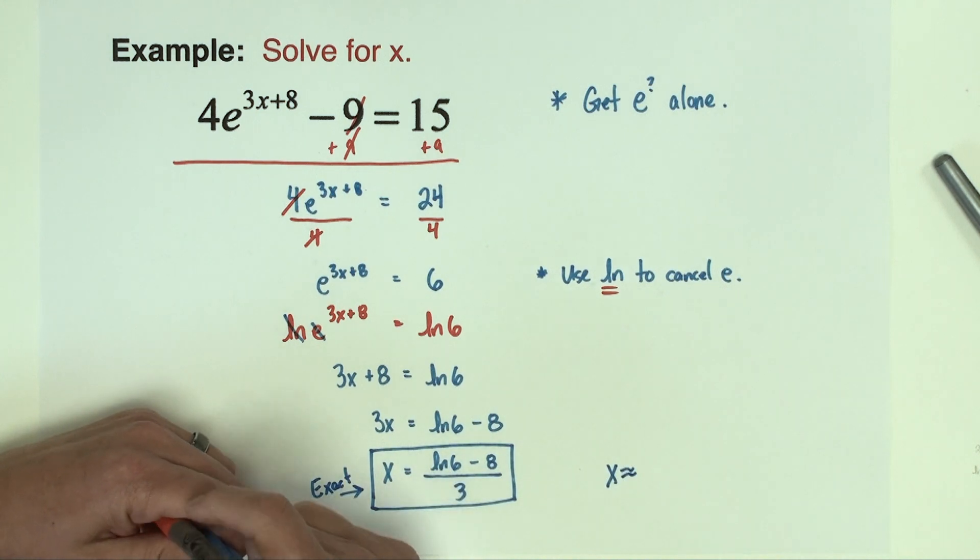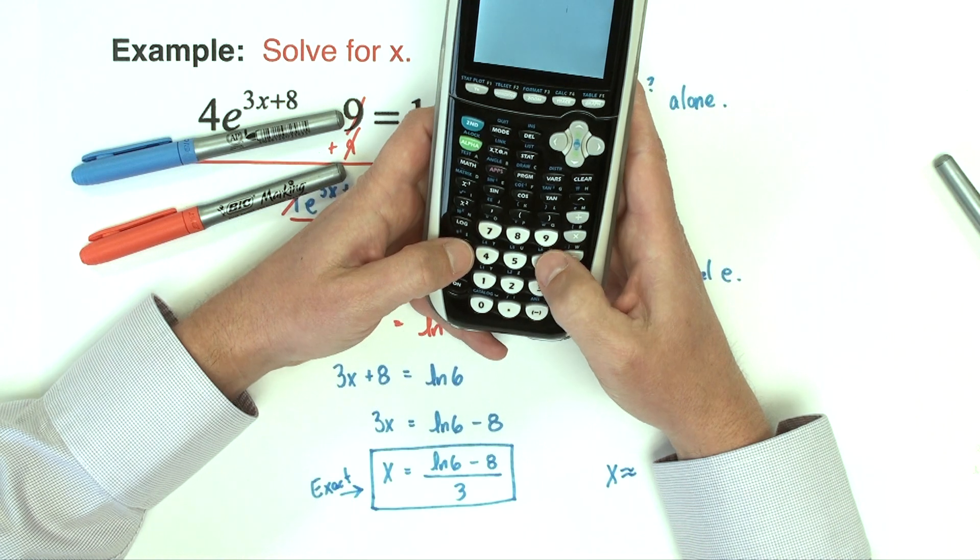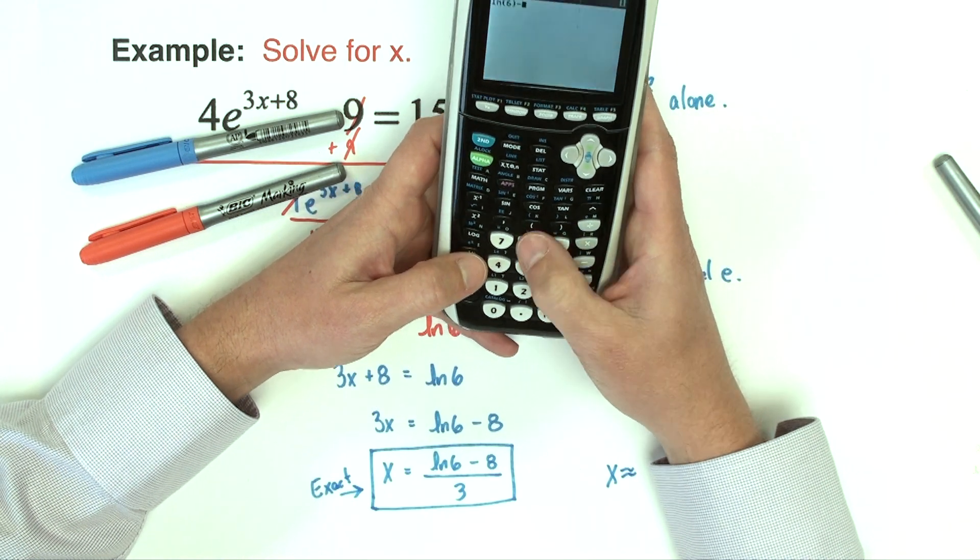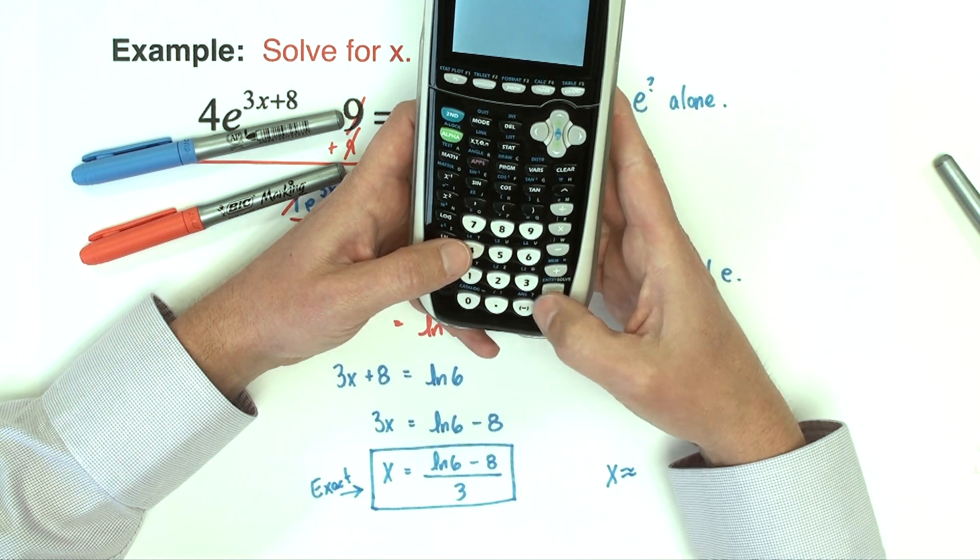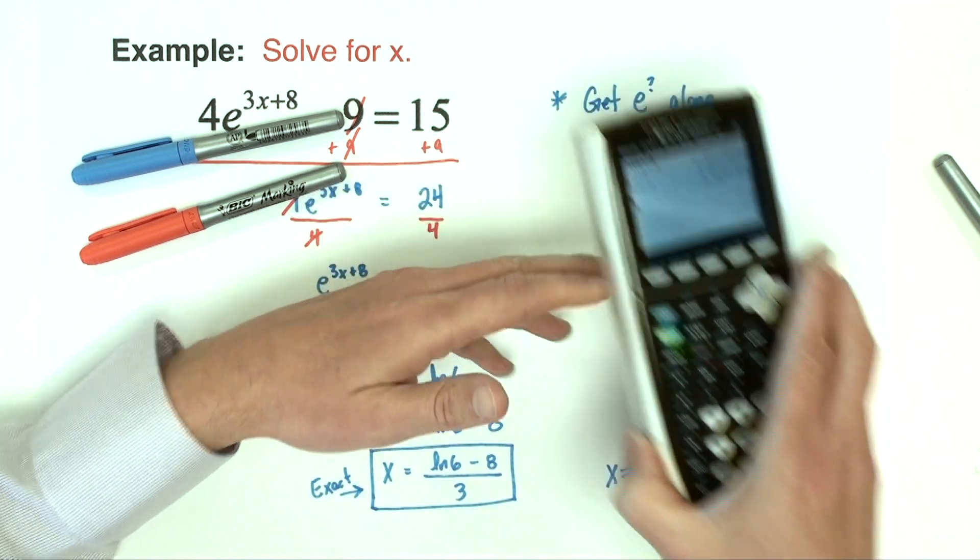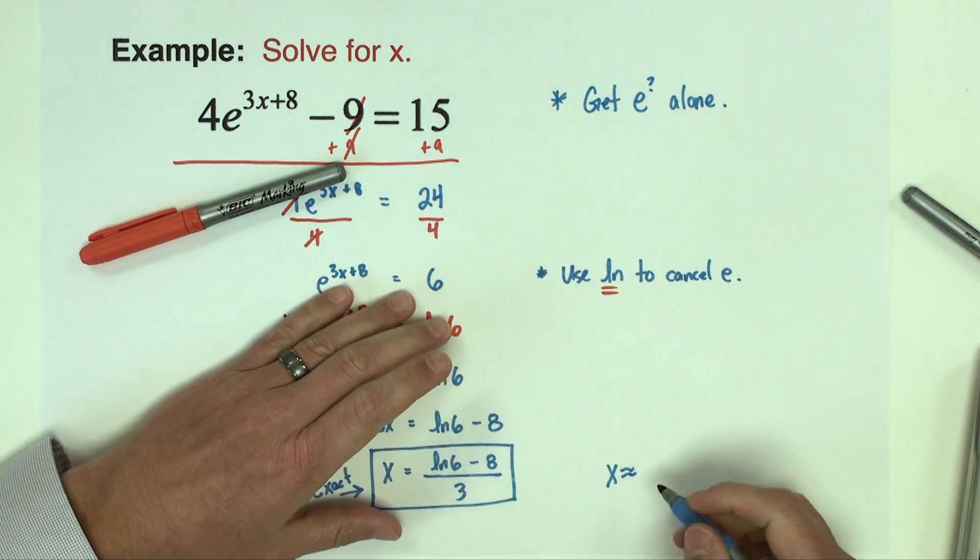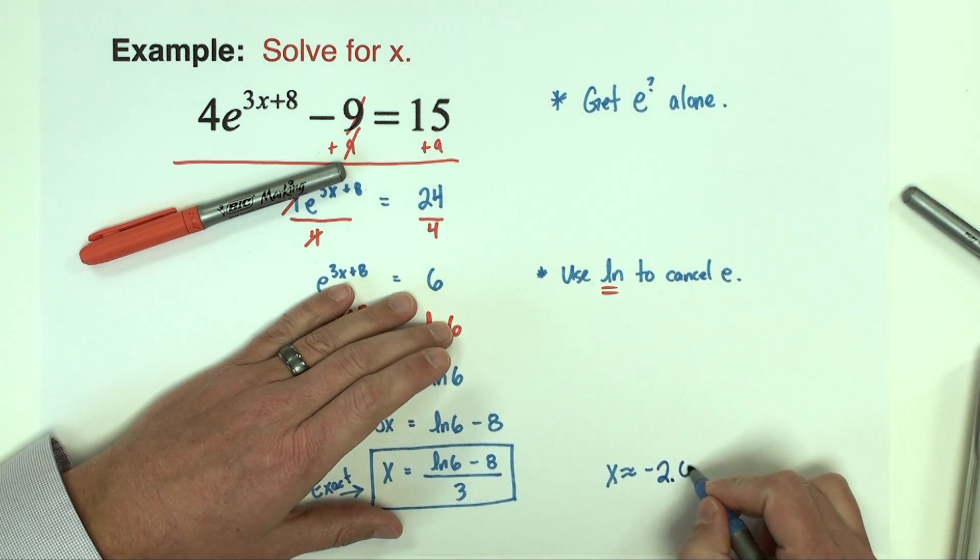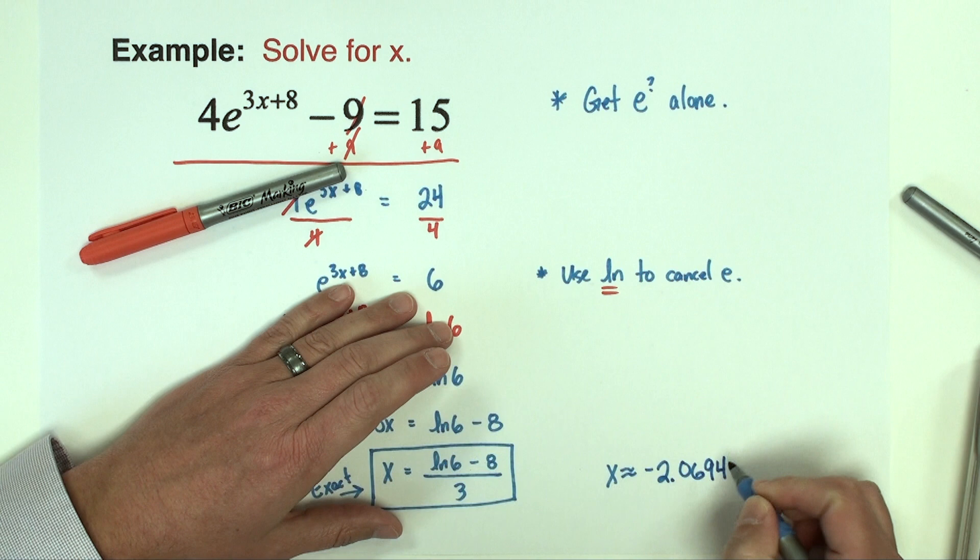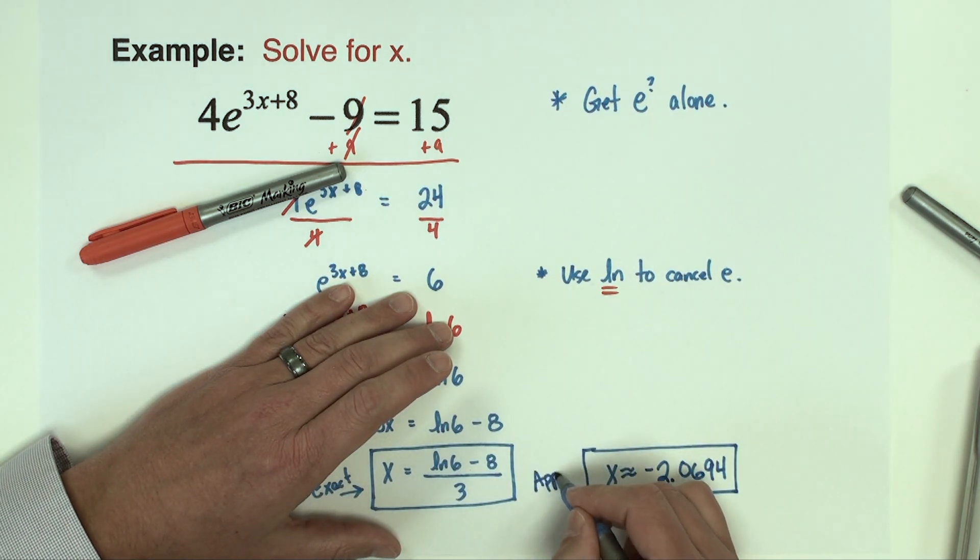If you want an approximation, then we're going to go to the calculator at this point. So I'm going to type in natural log of six minus eight, and then I'm going to take that answer, we're going to divide it by three. And again, like in the last video, I'm going to use four decimal places of accuracy here, so I've got negative 2.0694, and there is my approximate answer.